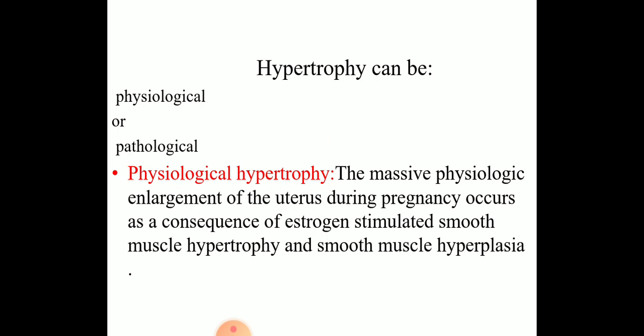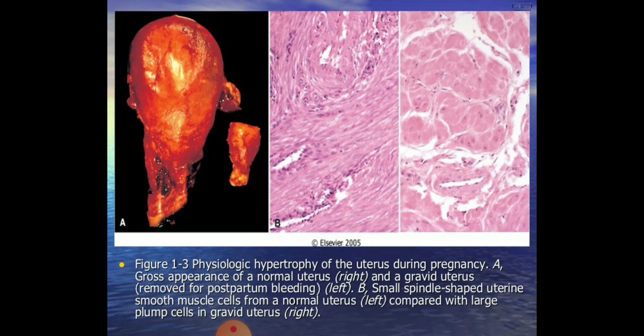Hypertrophy can be physiological or pathological. An example of physiological hypertrophy is the massive enlargement of the uterus during pregnancy, which occurs as a consequence of hormonal — that is estrogen-stimulated — smooth muscle hypertrophy and smooth muscle hyperplasia. In this figure, you can easily see the hypertrophied uterus compared to the normal uterus, and on the right side, normal smooth muscle compared to hyperplasia of the smooth muscle due to hormonal stimulation.